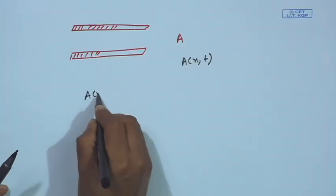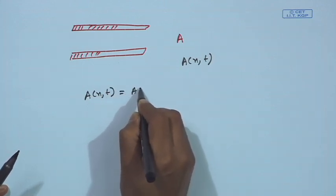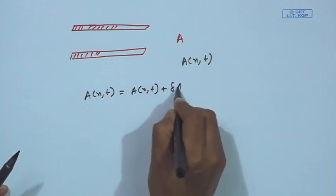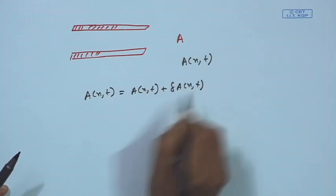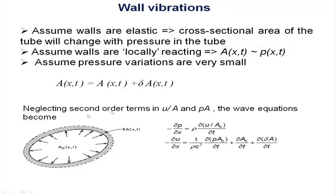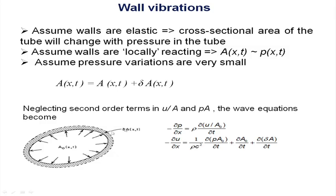At any time, the cross-sectional area A(x,t) is nothing but an average area — A(x,t) equals A₀(x,t) plus delta, a change in A(x,t) due to the pressure at that position and that time. So if you see the slides, inside it is A₀(t) fixed, and then delta A(x,t) is a fixed expansion.